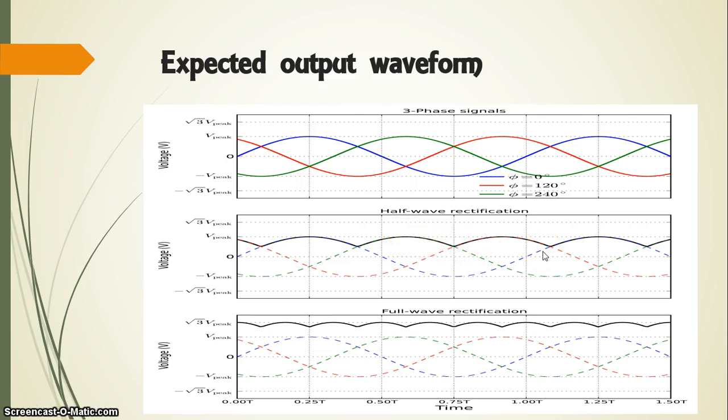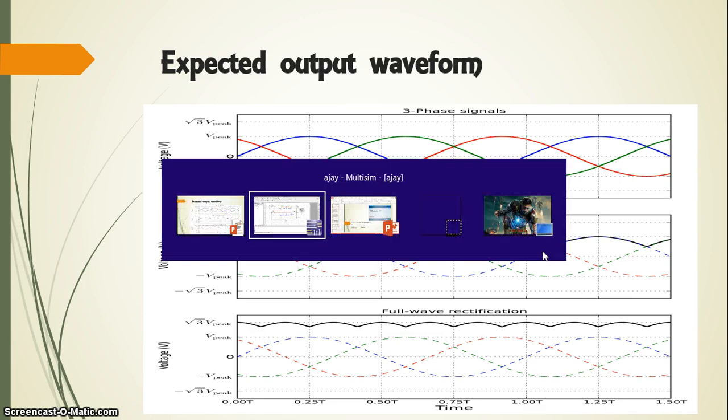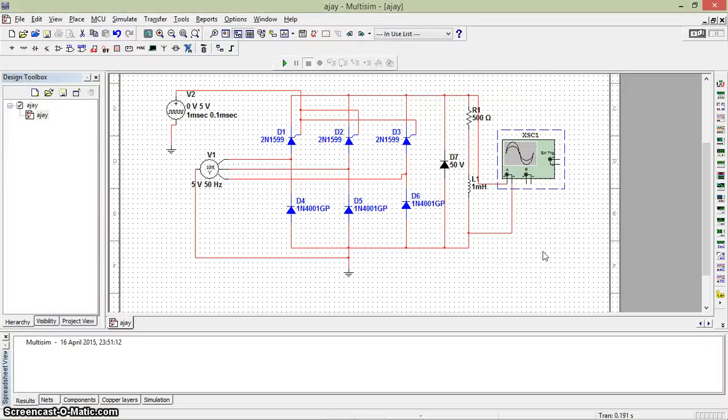We have simulated this circuit in Multisim. We have built this circuit. We have used three thyristors D1, D2, and D3 of type 2N1599 whose triggering voltage is around 5 volts. We have used three diodes. We used a three-phase star-connected supply and three diodes to cut off the negative voltage.